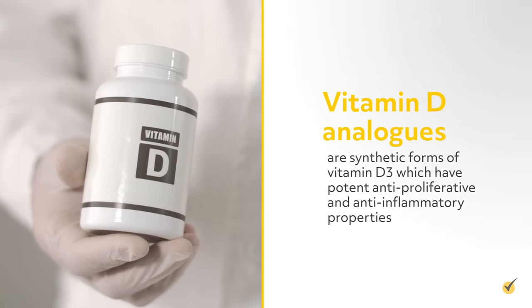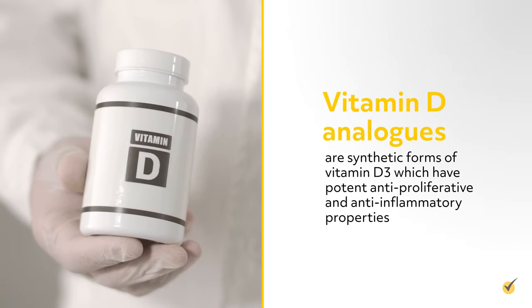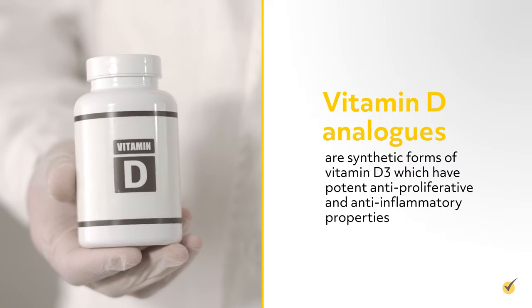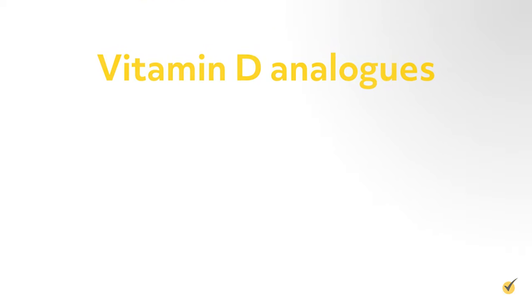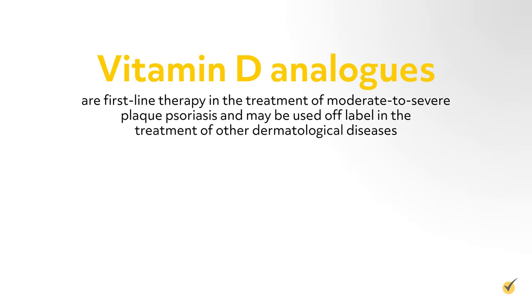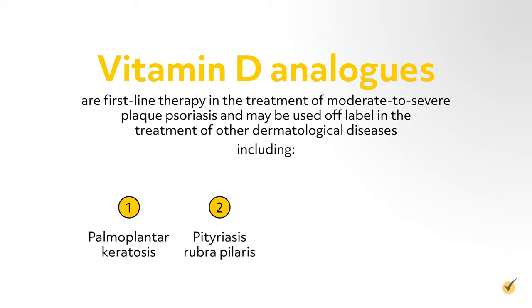Let's take a closer look at two common topical treatments: vitamin D analogs and sunscreens. Vitamin D analogs are synthetic forms of vitamin D3, which have potent anti-proliferative and anti-inflammatory properties. They are first-line therapy in the treatment of moderate to severe plaque psoriasis and may be used off-label for other dermatological diseases, including palmoplantar keratosis, pityriasis rubra pilaris, vitiligo, and ichthyosis.